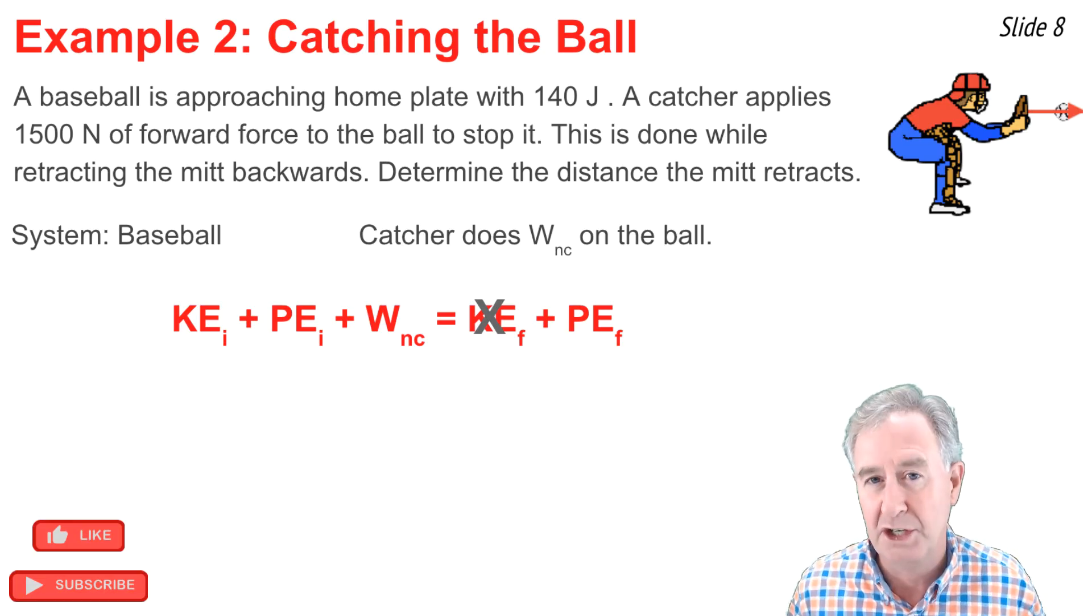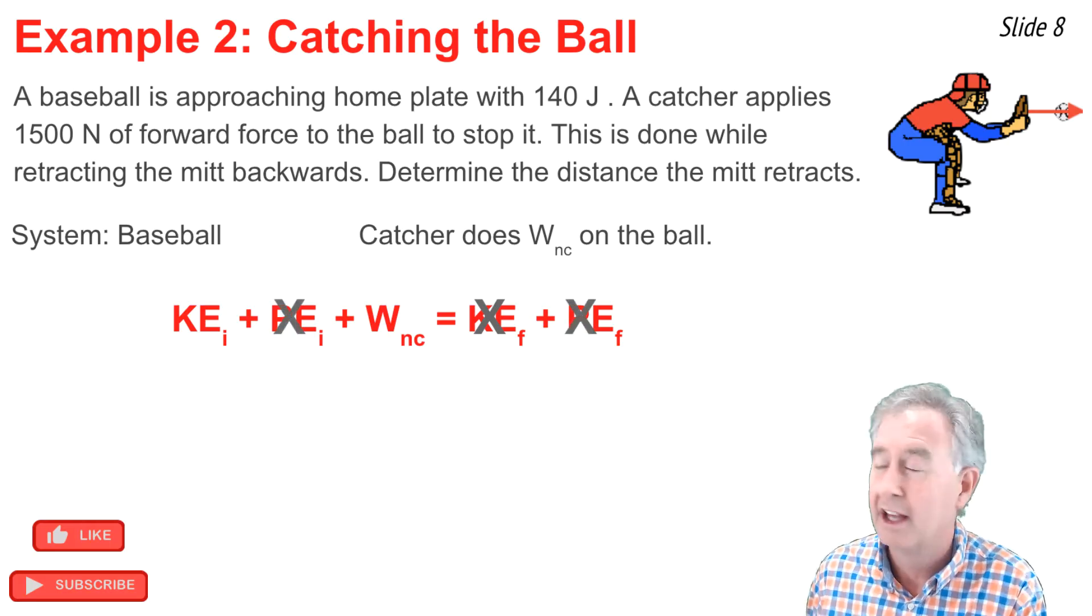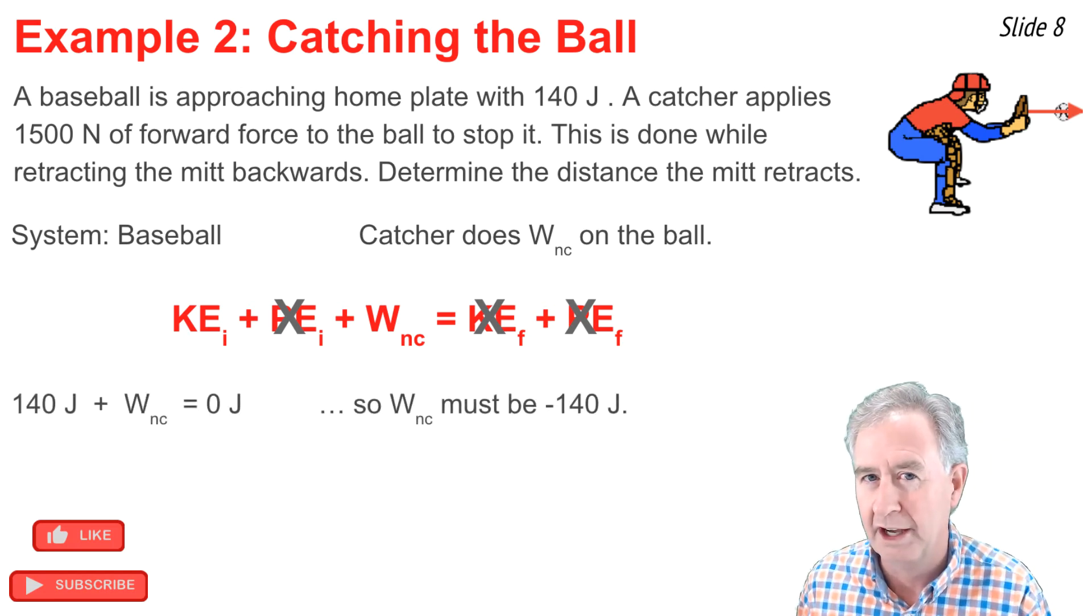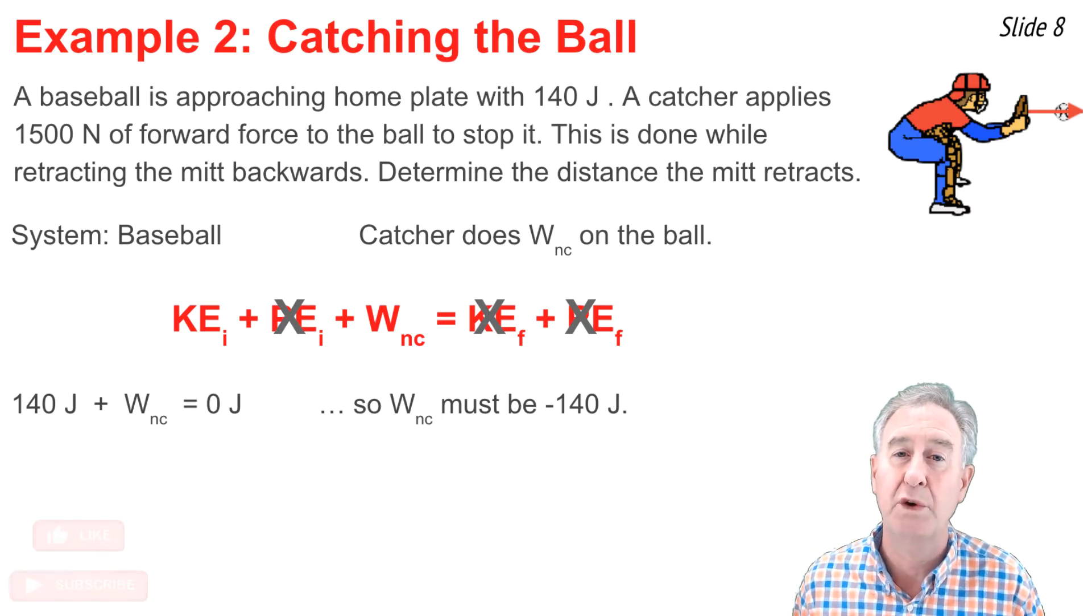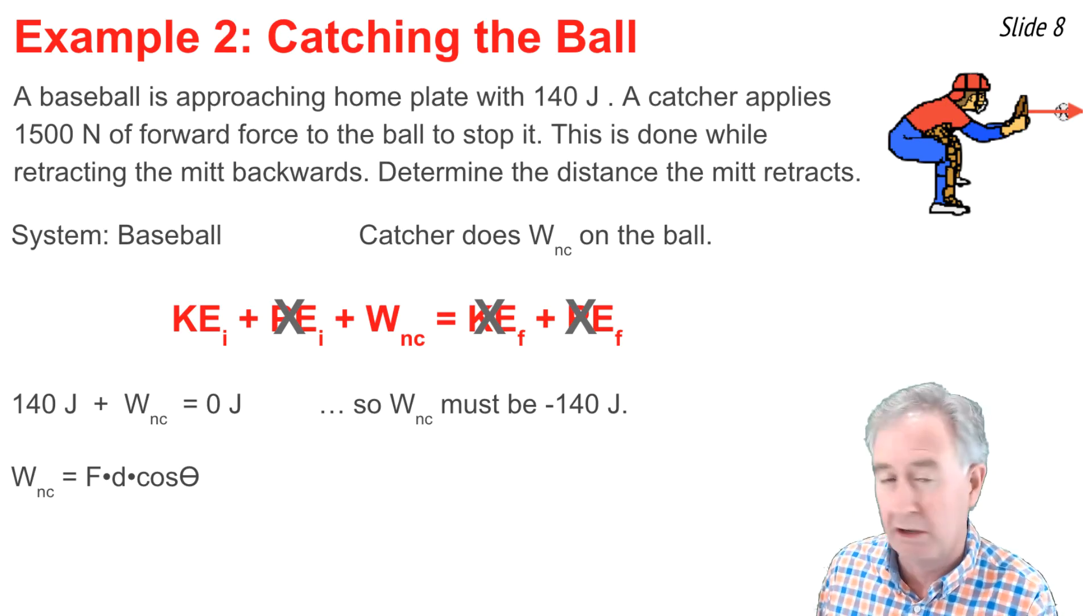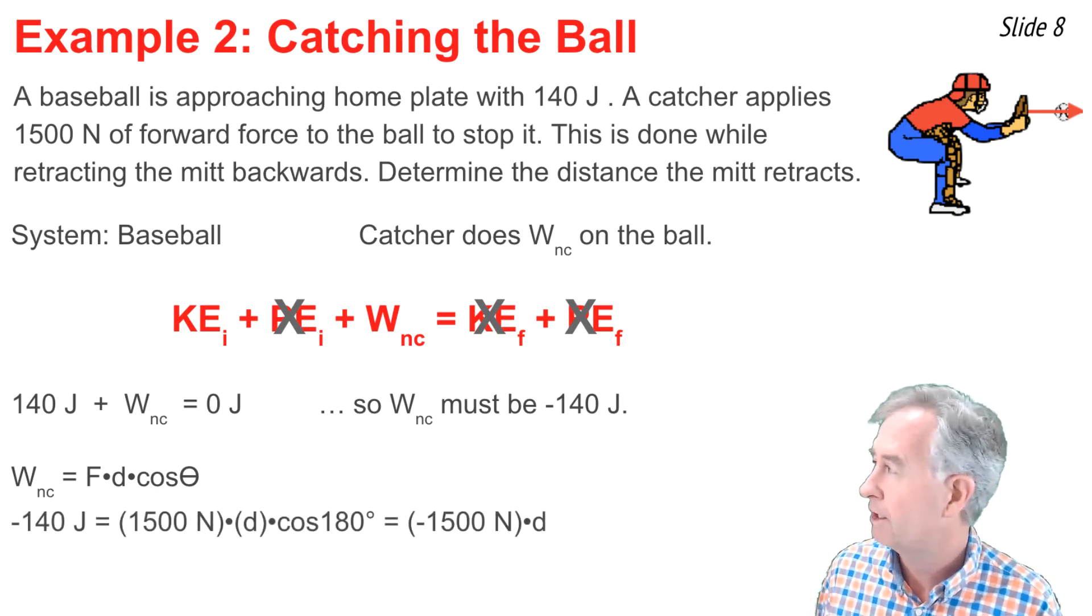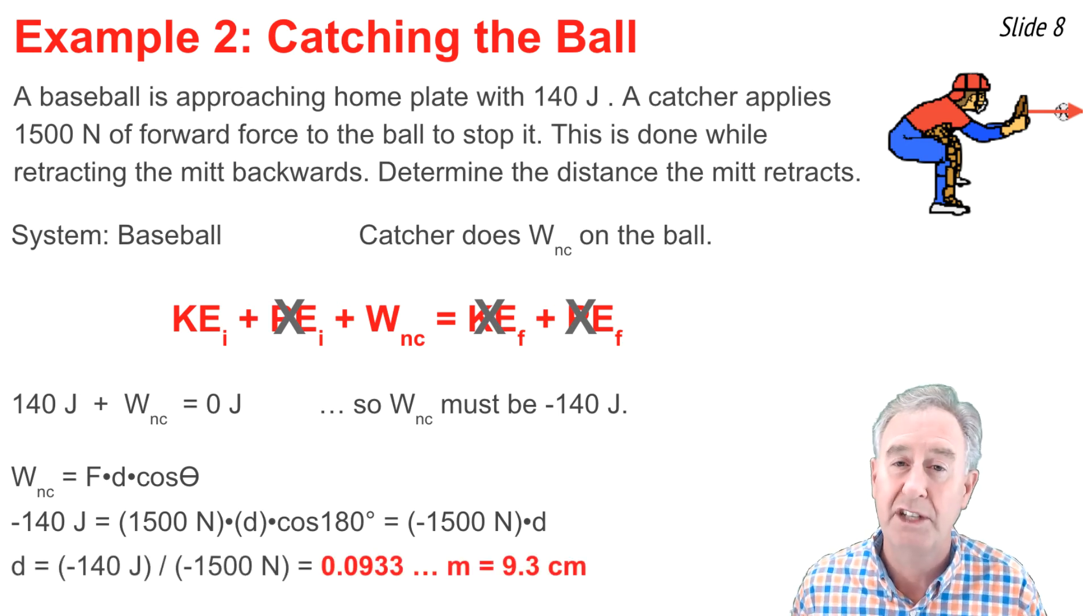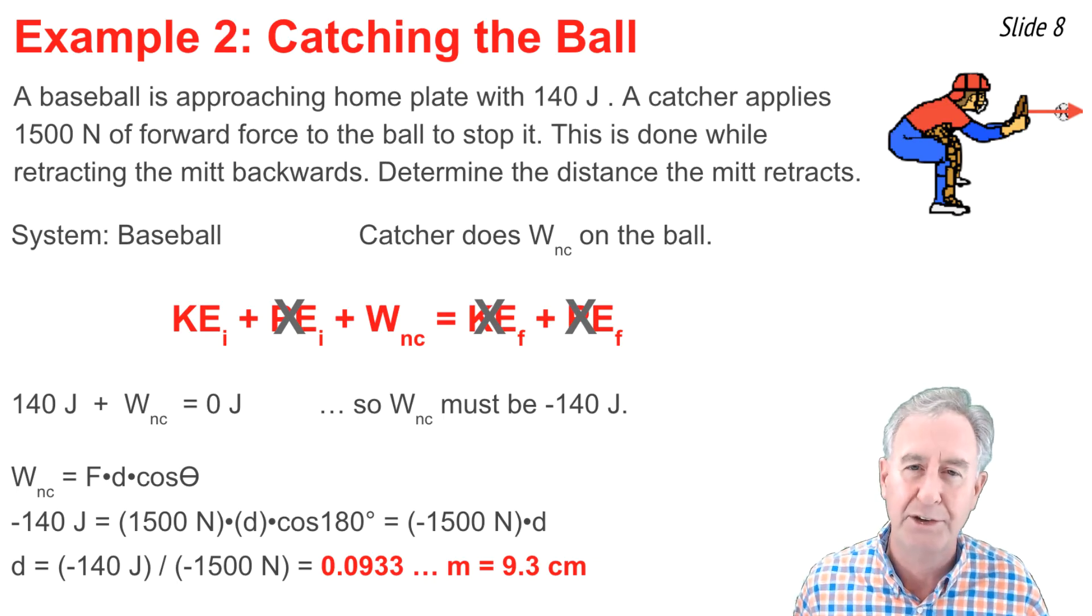Now if you think about the context of catching, the ball doesn't change its height during the catch, it only changes its speed. So I can say that the initial and final potential energy are equal to one another and therefore can be cancelled from this equation. Now I know that the initial kinetic energy is 140 joules. I don't know the work done but I do know the right side of the equation is zero. So that means the work done by the catcher on the ball must be negative 140 joules. I can now use my work equation to solve for the displacement of the ball which is the distance that the mitt retracts backwards. So I plug in negative 140 joules for the work, I plug in 1500 newtons for the force, and I plug in 180 degrees for the angle between the force and the displacement vector. I can now solve for d by dividing both sides by 1500 newtons, I pull out my calculator, I do my math, and d comes out to be 0.0933 meters, or 9.3 centimeters.